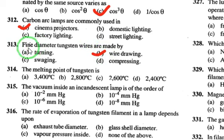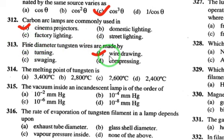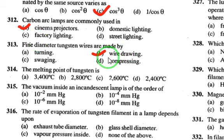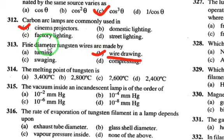Fine diameter tungsten wire is made by wire drawing. Just remember: fine diameter tungsten wire → wire drawing.